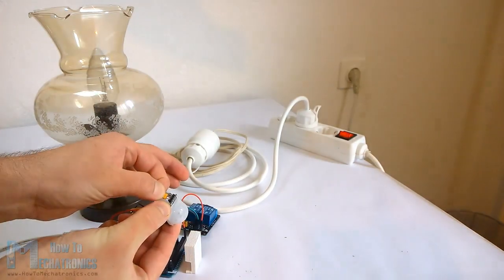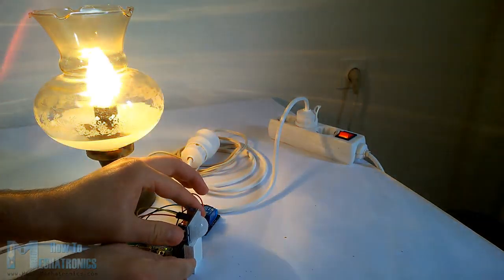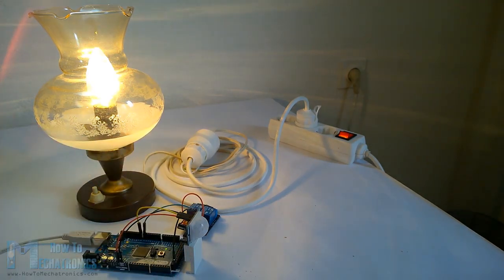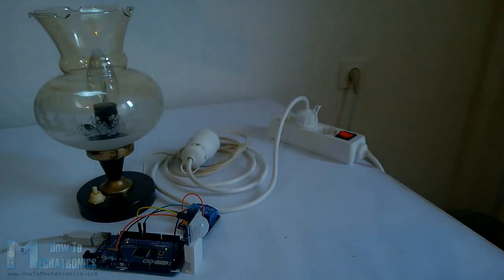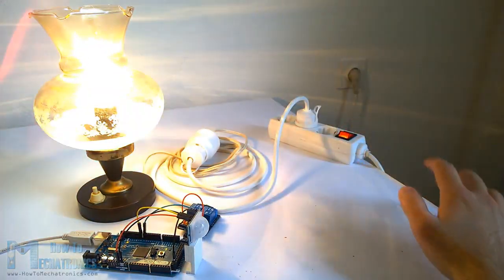If I change the sensor with the jumper to the repeatable trigger mode and I constantly move my hand, the lamp will be constantly on as well and it will turn off after the movement is gone and the set delay time is over.